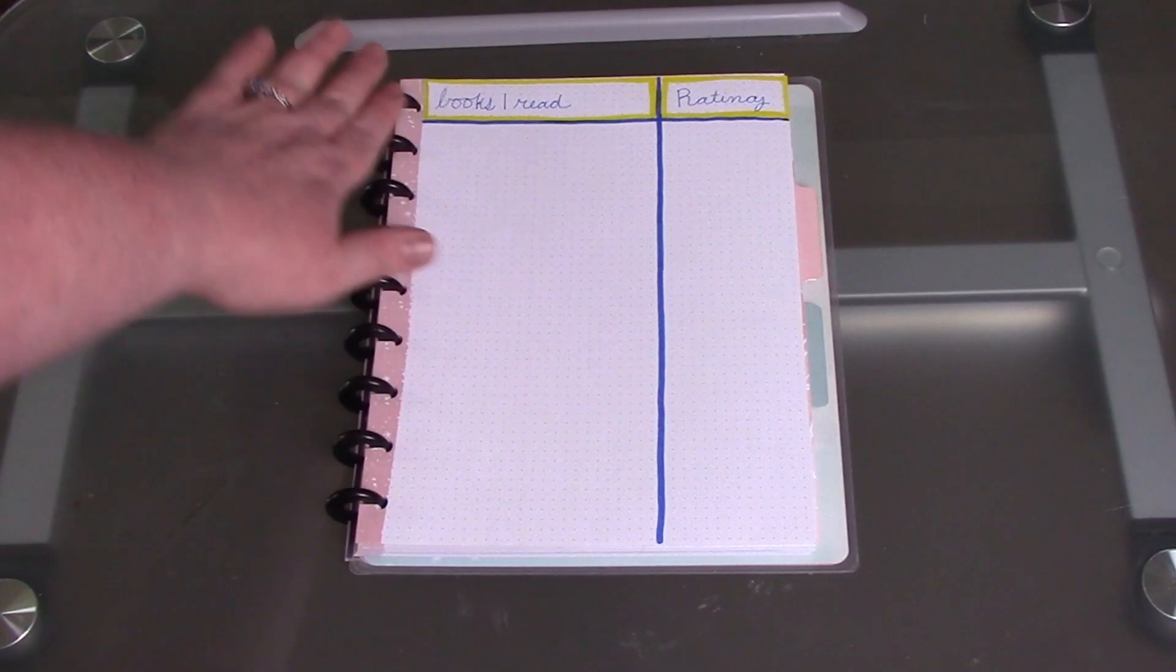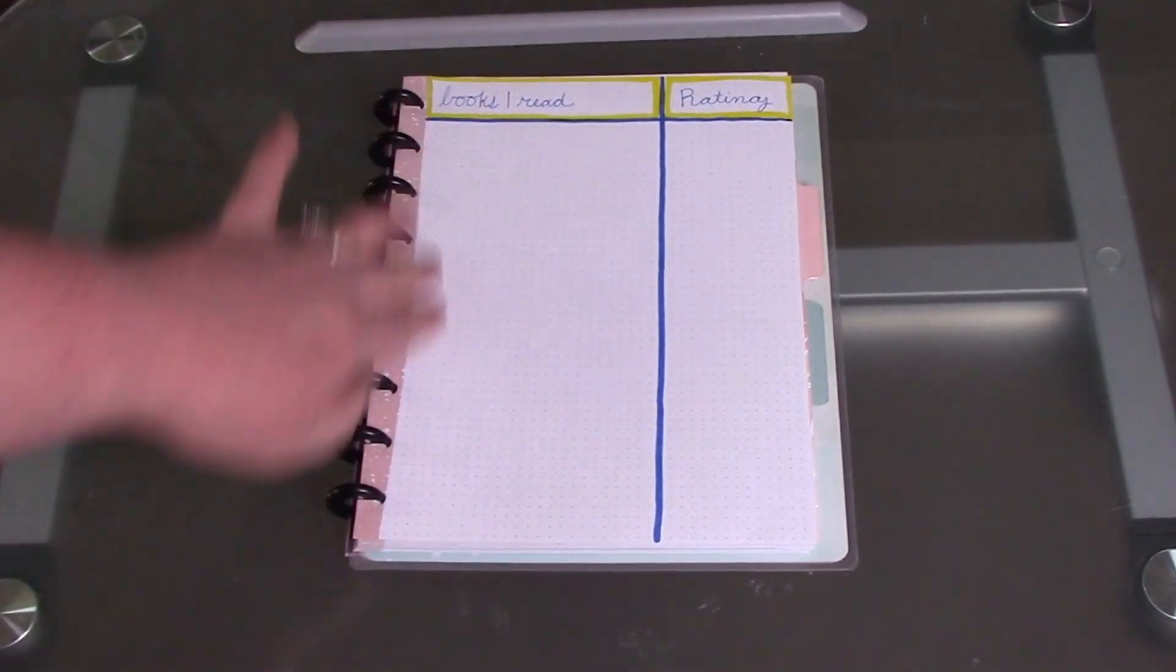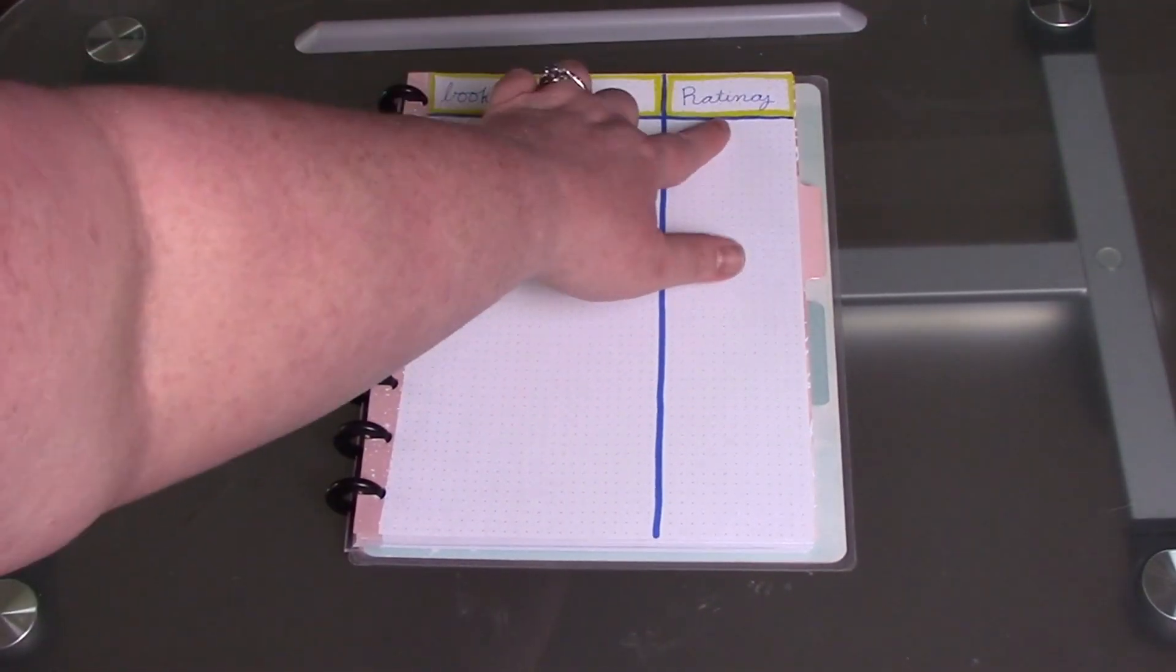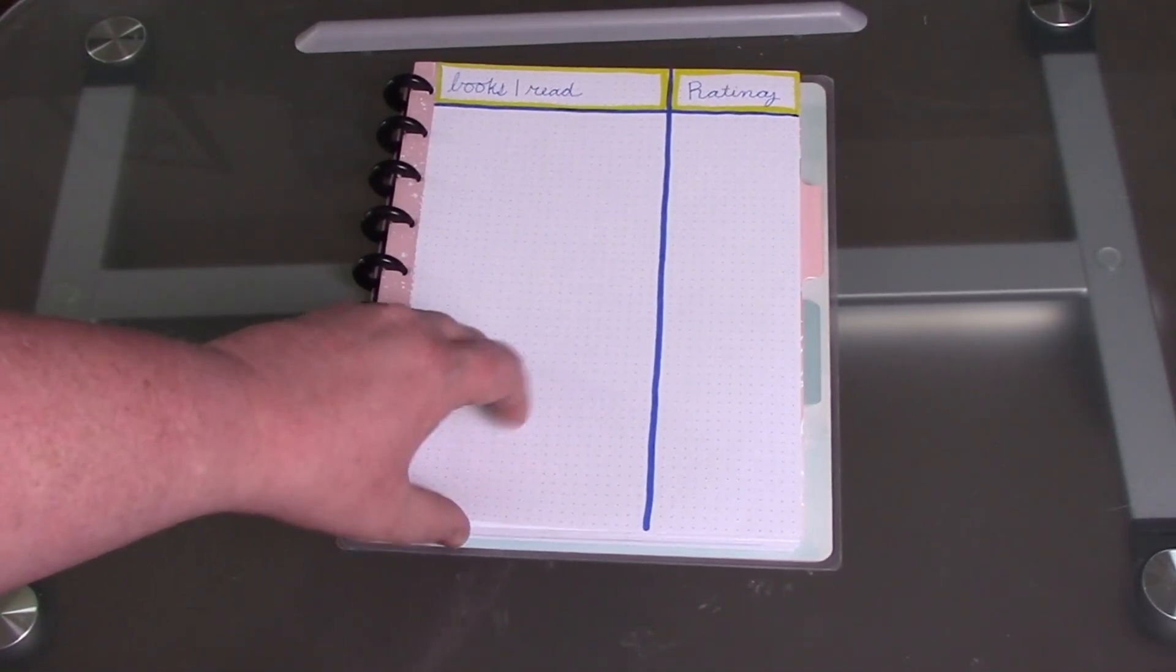On this page, it's very simple - it's the books I read and the rating I give them. So as I read a book, I will fill in the title and what my rating was, just to more easily keep track of those kind of things.